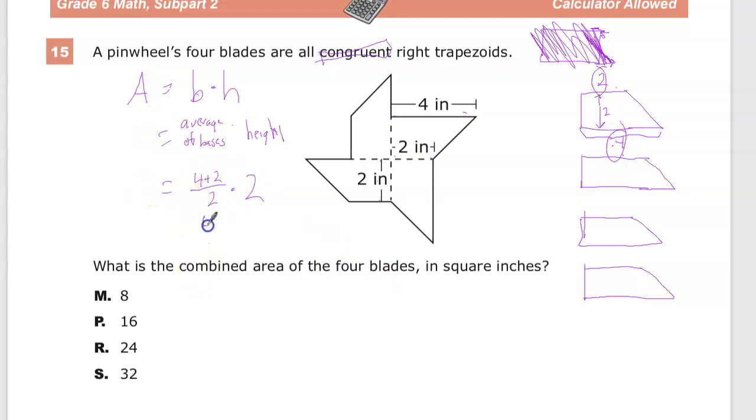Four plus two, last time I checked, was six. Six divided by two is three. And three times two is six. That's the area of one trapezoid.